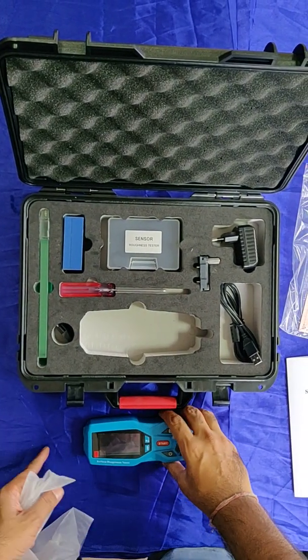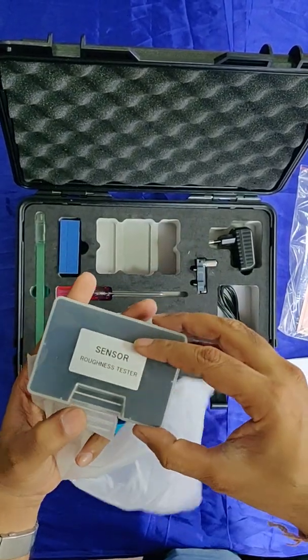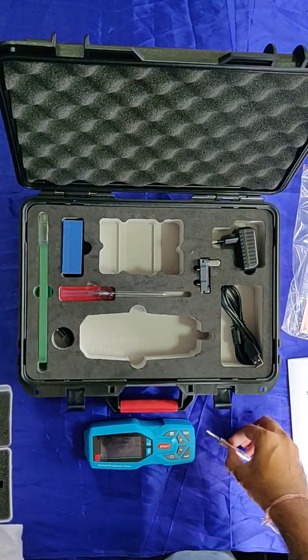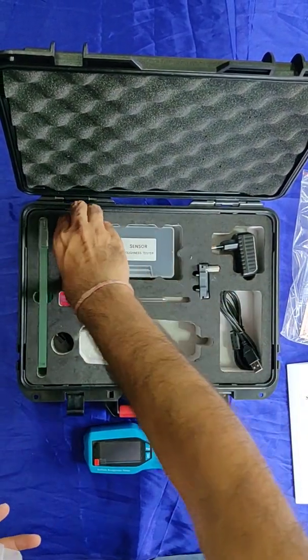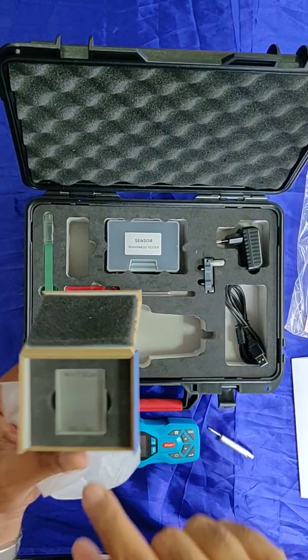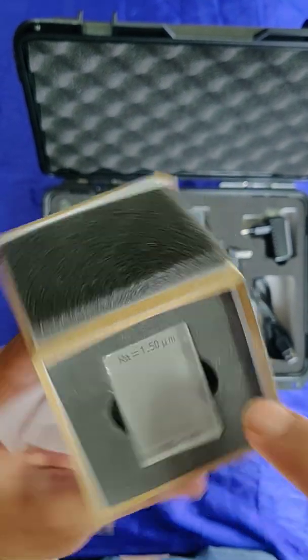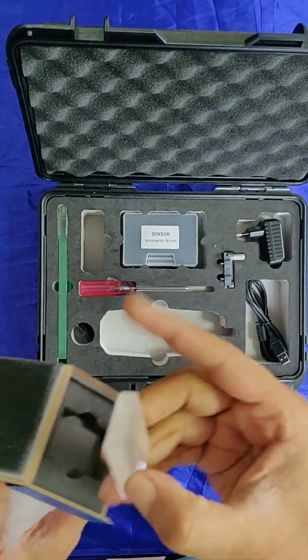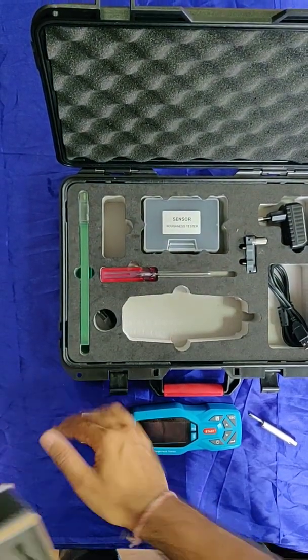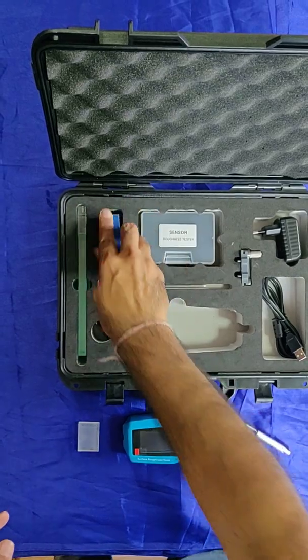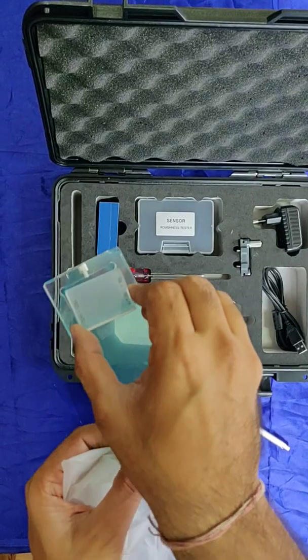I'll explain you each and everything. This is the sensor which is for the stylus, so we put it out. This is a test specimen - you can see it says 1.50 microns. So we will pull this out, we will take this out.